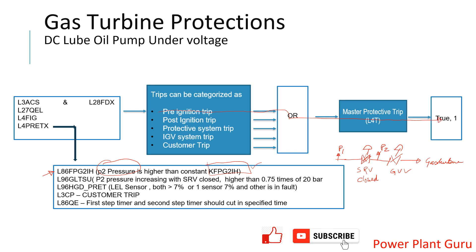Another similar protection also monitors P2 pressure with the SRV closed. In this case, if P2 pressure is higher than 0.75 times of 20 bar — which may be 20 bar for one machine or 21 bar for a different machine — it is considered an unhealthy condition. The system watches continuously, and if pressure is already 75% of normal operating pressure while the SRV valve is closed, that is abnormal. This condition also gives L4PRETX, leading to a pre-ignition trip through the master protective system.